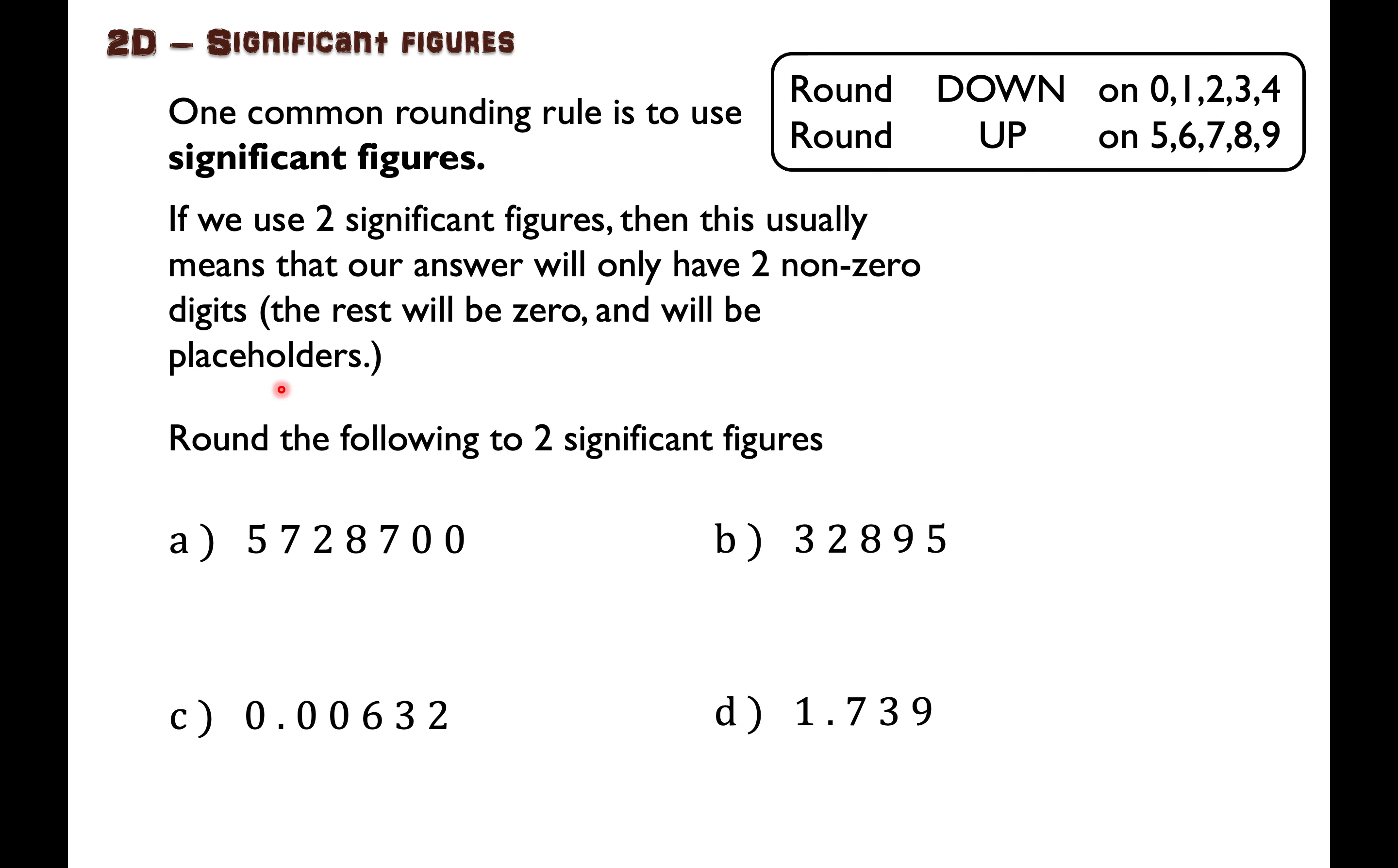Now that seems a little bit abstract, so let's see how it actually works. Suppose I want to round this number here to two significant figures. I first look at the first two significant digits. I read from left to right until I find a digit that's not a zero, and then I keep that one and the next one.